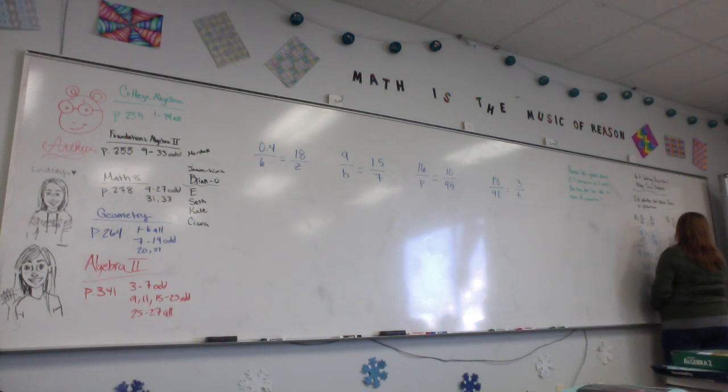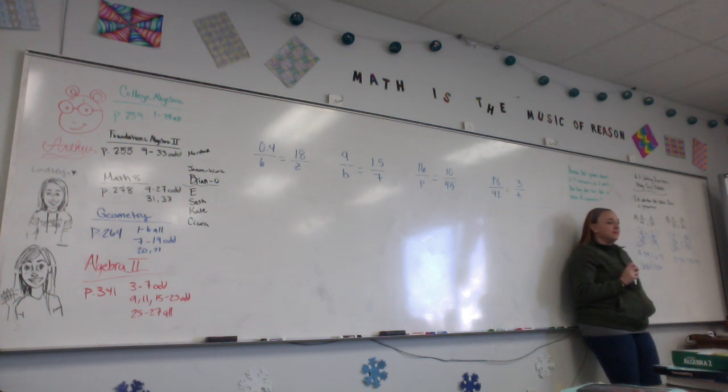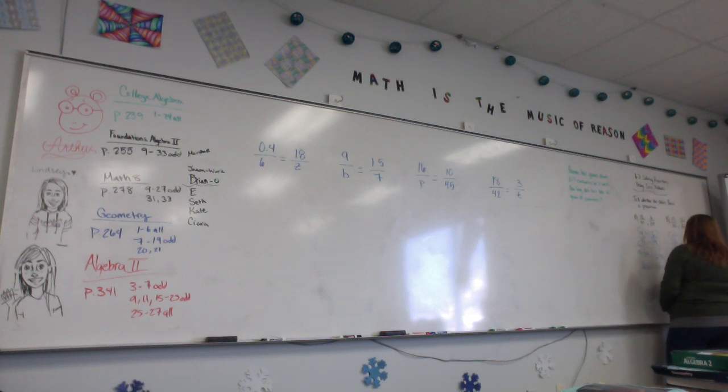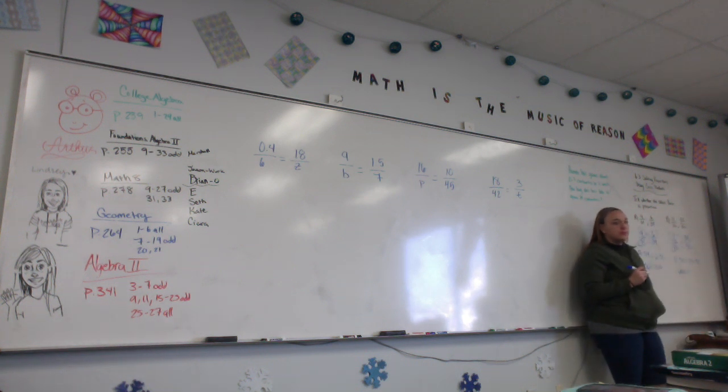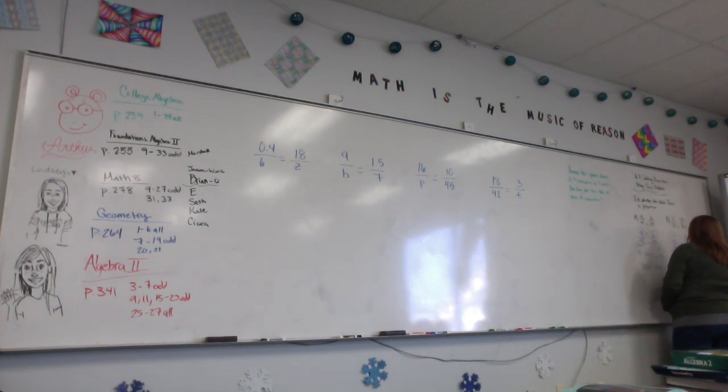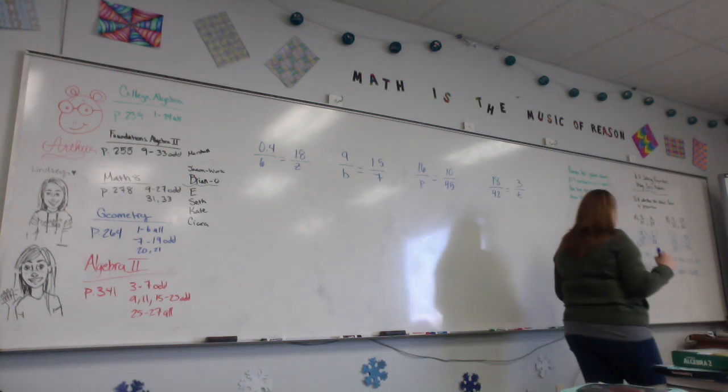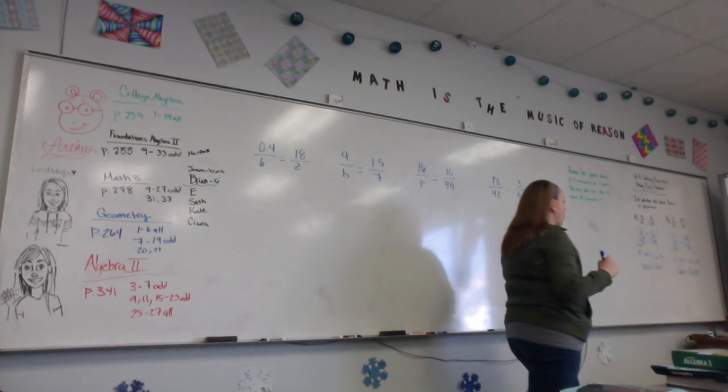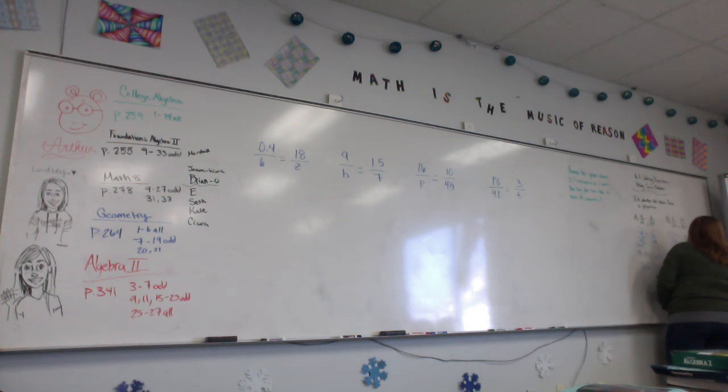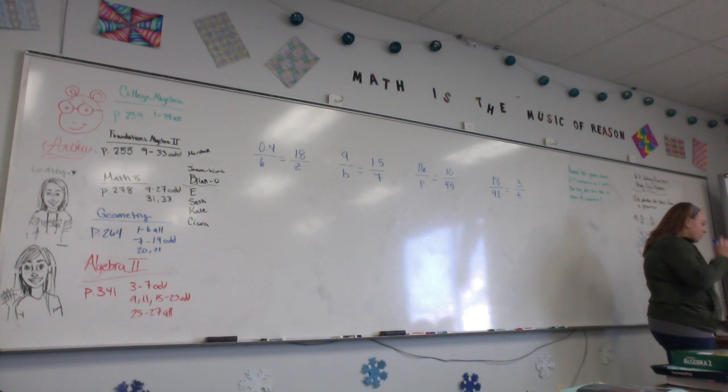So what is 12 times 50? 600. And what is 20 times 32? 640. So are those proportions? Are those ratios... Do they form a proportion? No.